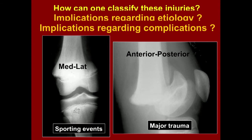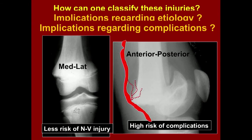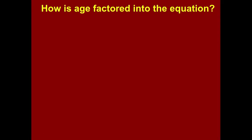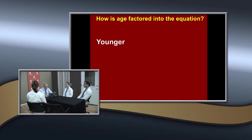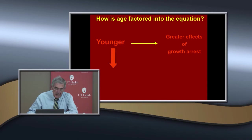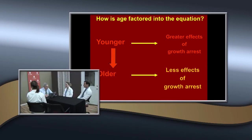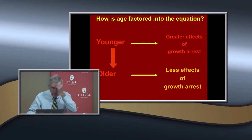What about complications? Which is more likely to have vascular complications? Actually, the anterior-posterior pattern has more vascular risk. The geniculate arteries tie the vessel down to the distal metaphysis and physis, so a sharp spike can impinge on the vascular supply. Regarding age: a younger patient with growth arrest will have more severe deformity. A 15-16 year old with growth arrest has much less of a problem since growth is nearly complete.